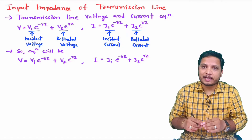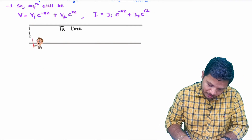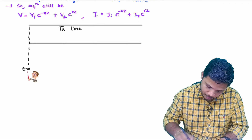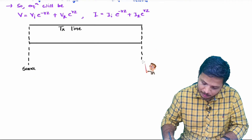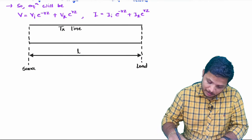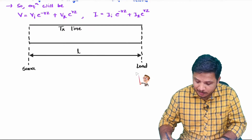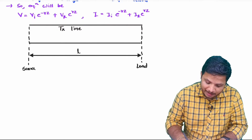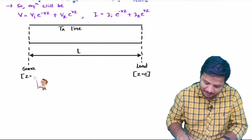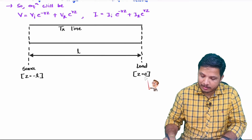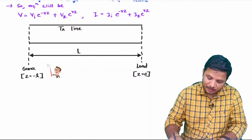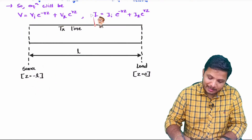I will explain some sign conventions regarding voltage and current with respect to location along the transmission line. In this transmission line, one end belongs to the source and the other end belongs to the load. The length of the transmission line is L. An important thing to know: at the location of the load, z equals 0. As you move toward the source, z equals minus L.